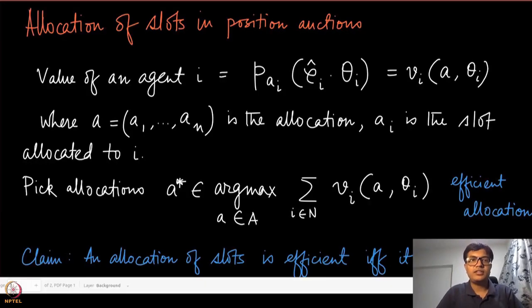Let us now look at how slots are allocated in position auctions and how they are priced. As we discussed before, the value of an agent i is a product of three components. The first component is its value—how much it values that particular click, independent of which position that click came from. Once the user is in the website of the advertiser, that is the value that it gets.